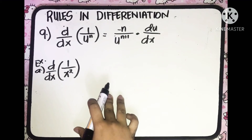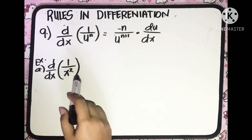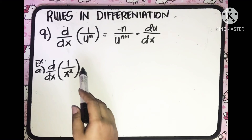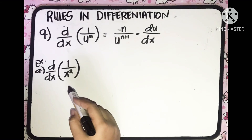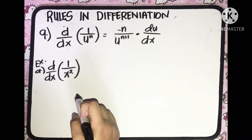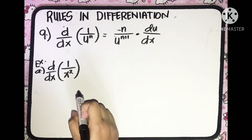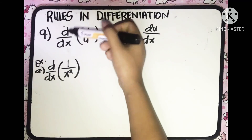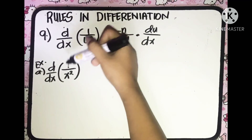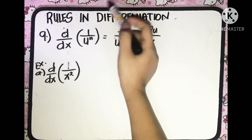To identify whether to use the quotient rule or this 9th rule: remember that when the numerator is 1, you use this 9th rule. But if it is not 1, then you use the quotient rule. Always remember that when 1 is the numerator and the denominator is raised to a certain exponent, you are going to use the 9th rule.